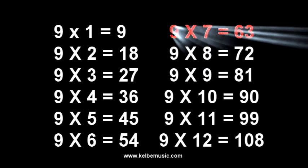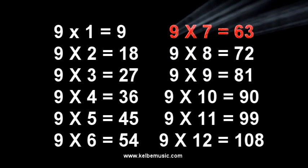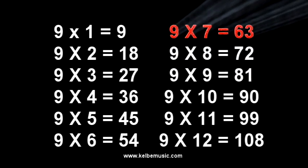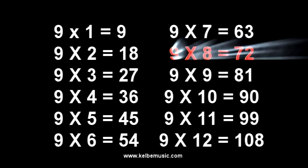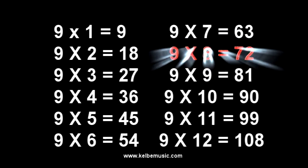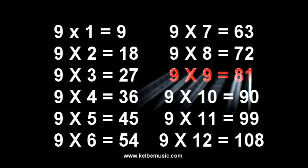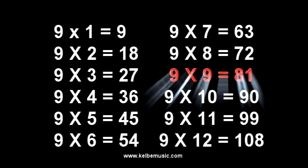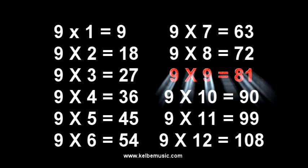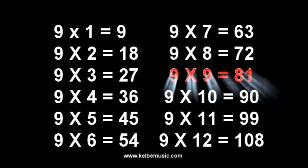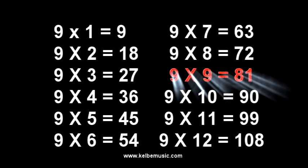9 times 7 is 63, 63. 9 times 8 is 72, 72. 9 times 9 is 81, 81.